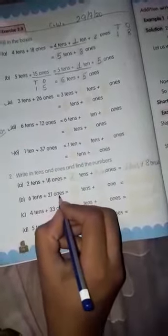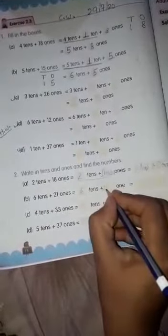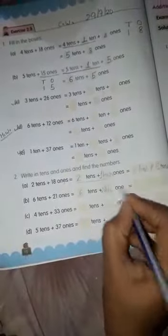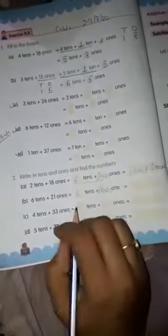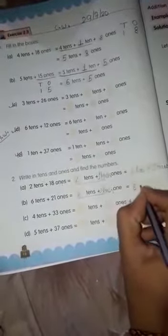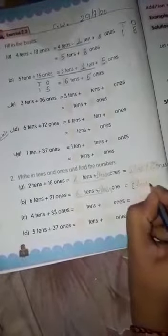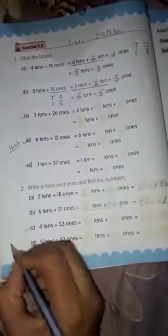6 tens plus 20 ones. 6 tens as it is. 2 tens plus 0 ones. So 2 tens and 6 tens is 8 tens plus 0 ones. Now you have to do this in your homework.